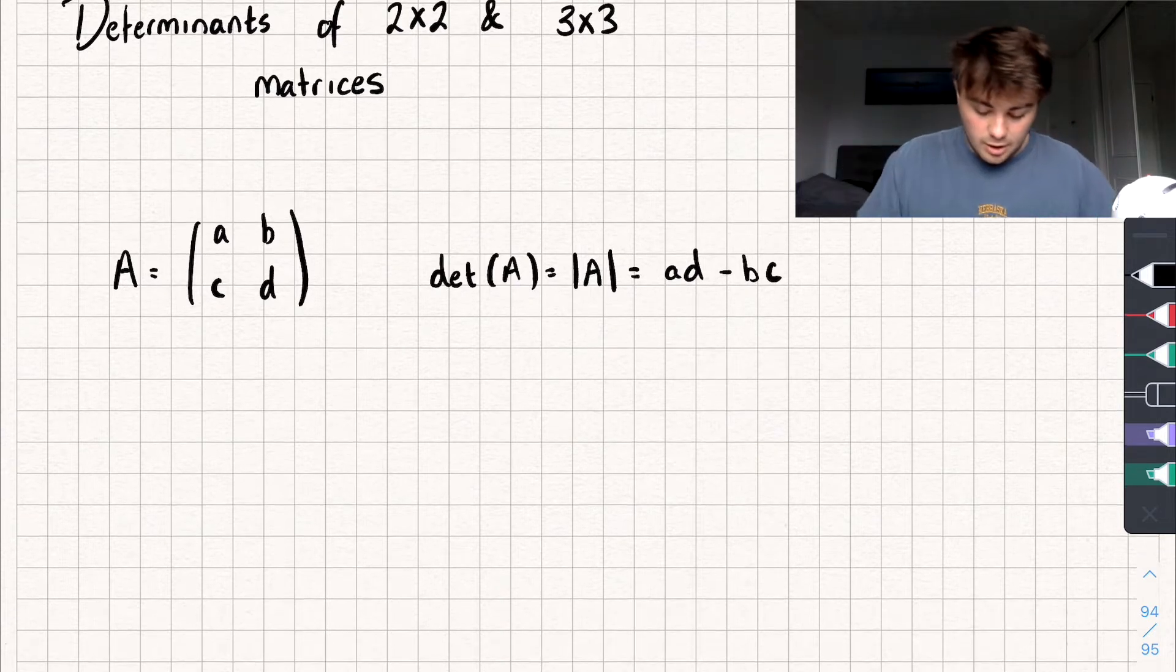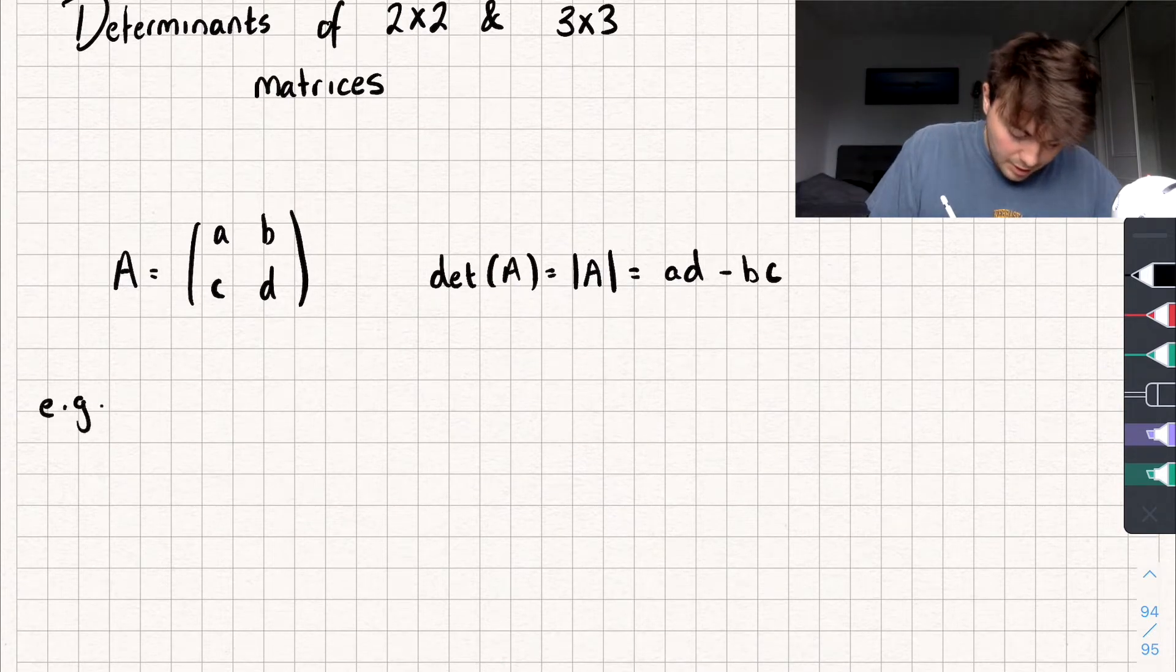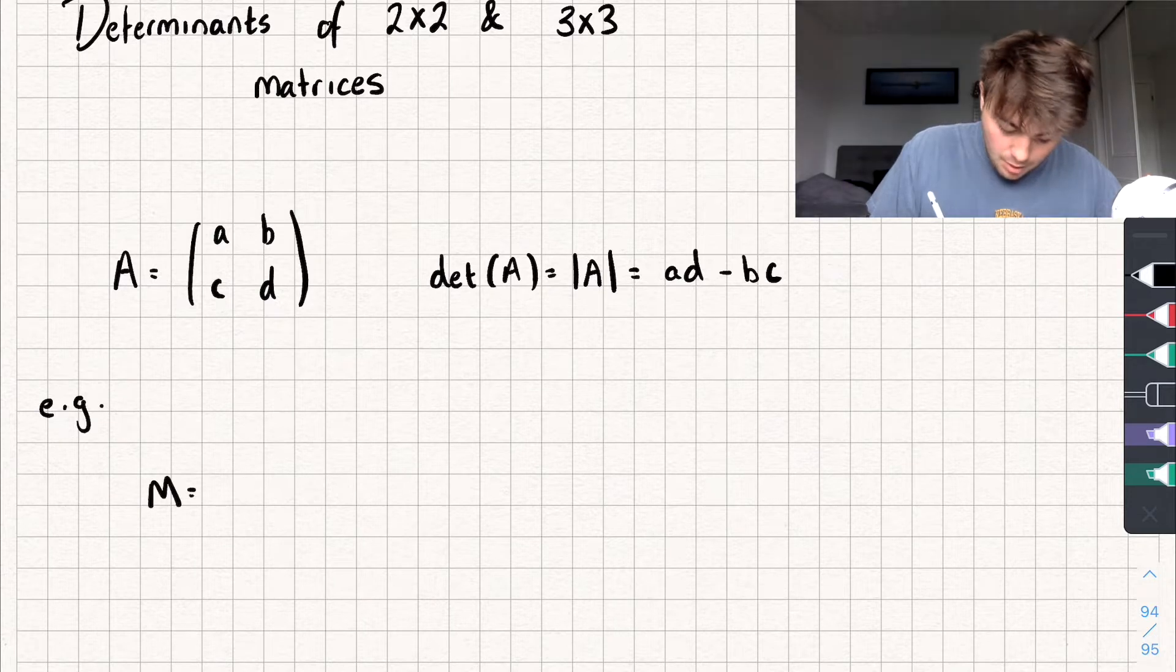Pretty easy, so let's look at an example. So say we have another 2x2 matrix, say M, which I could write as 2, 1, 3, 4 for example.